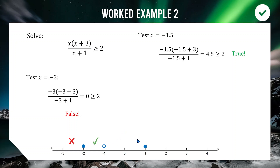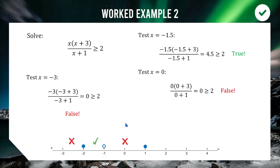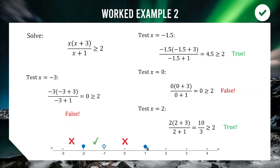Testing x = 0 (between −1 and 1): substituting gives 0, and 0 ≥ 2 is false — not in solution. Testing x = 2 (greater than 1): the calculator gives 10/3 ≈ 3.33, and 3.33 ≥ 2 is true — this region is in the solution.